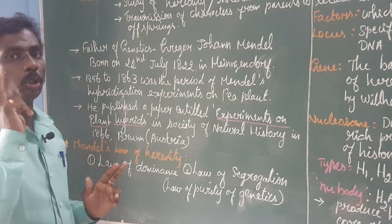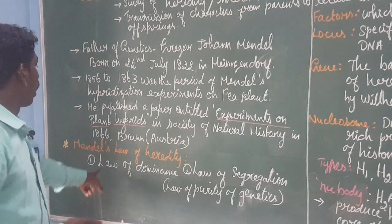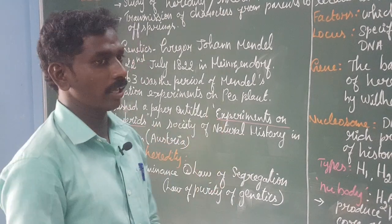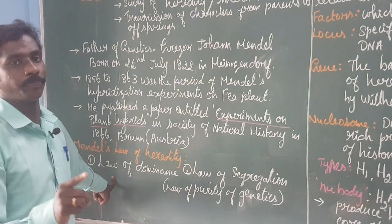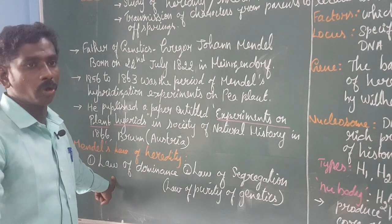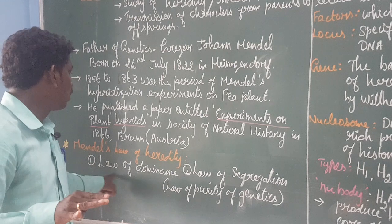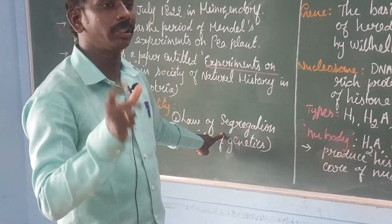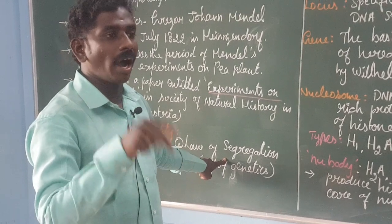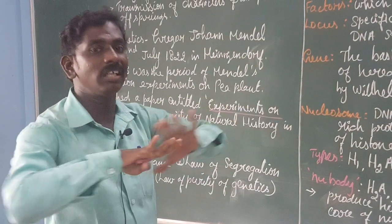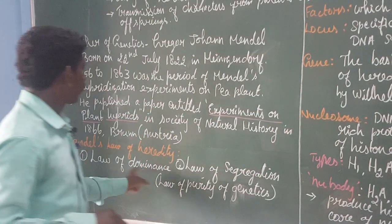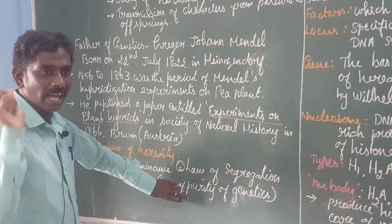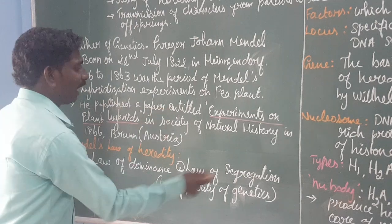The two laws he produced were the law of dominance and the law of segregation. In the first generation, only the dominant character is produced and expressed — that is the law of dominance. In the law of segregation, dominant and recessive genes remain together, and at gamete formation time, the genes segregate. The law of independent assortment states that a single gamete carries a single character — they never intermix.